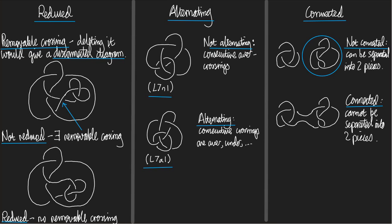Here's an important point. If I start with something that's not reduced because it has a removable crossing, then I can remove the removable crossing by doing that little maneuver that untwists part of the diagram and puts it back down again. So if I take a diagram that's not reduced, I can make it reduced by repeatedly getting rid of the removable crossings.